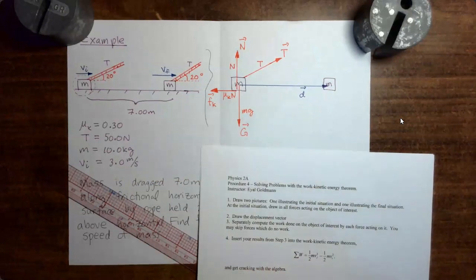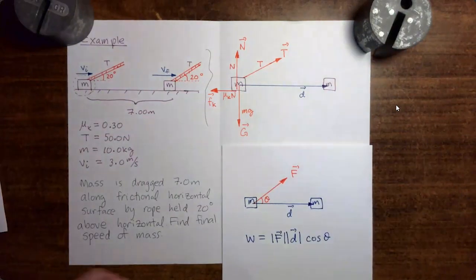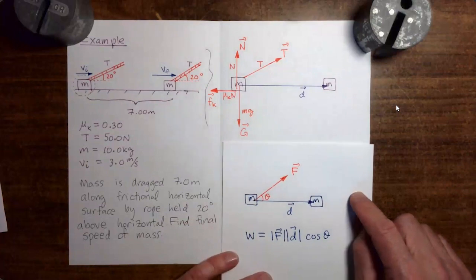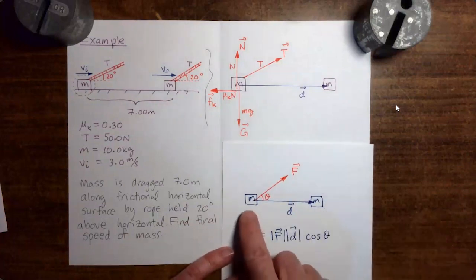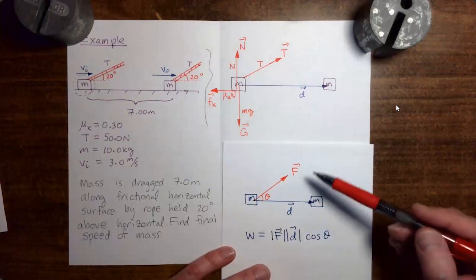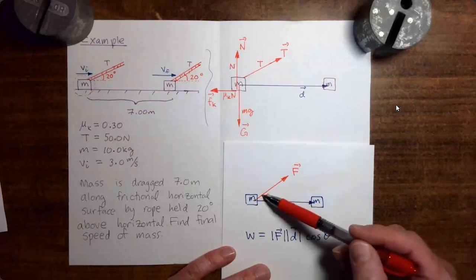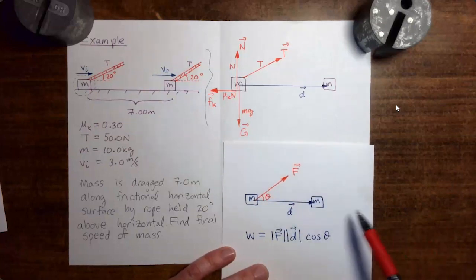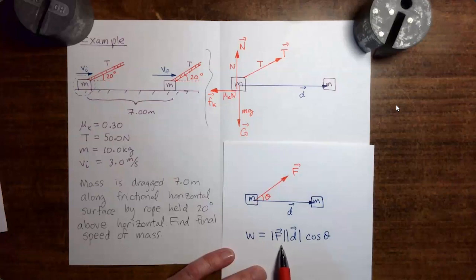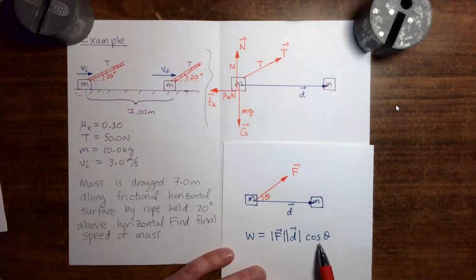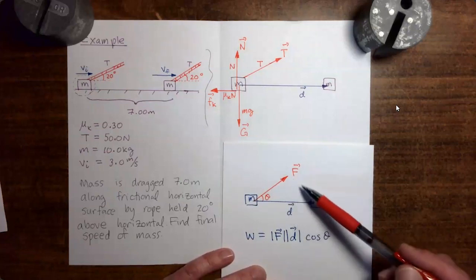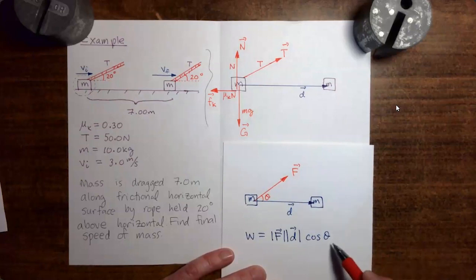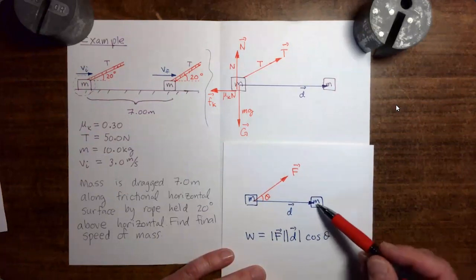You may skip forces which do no work. Before proceeding to calculate the work done by the various forces, let's recall the formula for computing work. If we have a mass which goes through a displacement d while acted on by a force F, and there is an angle theta between the force vector and the displacement vector, the work done by the force equals the magnitude of the force times the displacement times the cosine of the angle between the force vector and the displacement vector. Any force which is perpendicular to the displacement does a work of zero.